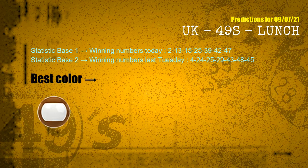According to the statistics above, with winning numbers today 02, 13, 15, 25, 39, 42, 47, and winning numbers last Tuesday 04, 24, 25, 29, 43, 48, 45 — the most frequently following color is brown.